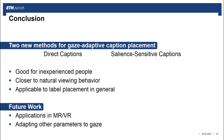In conclusion, we presented two new methods for gaze-adaptive captions: direct and salient-sensitive captions. They are preferred by inexperienced people and result in gaze distributions that are closer to natural viewing behavior. We also see this as an approach for label placement problems in general. As future work, we plan an application in mixed and virtual reality, where especially information representation in head-up displays poses a big challenge. We further plan to adapt other parameters to personal gaze behavior, for example the playback speed of videos to help slower readers follow the content better. Thank you for listening to our presentation.